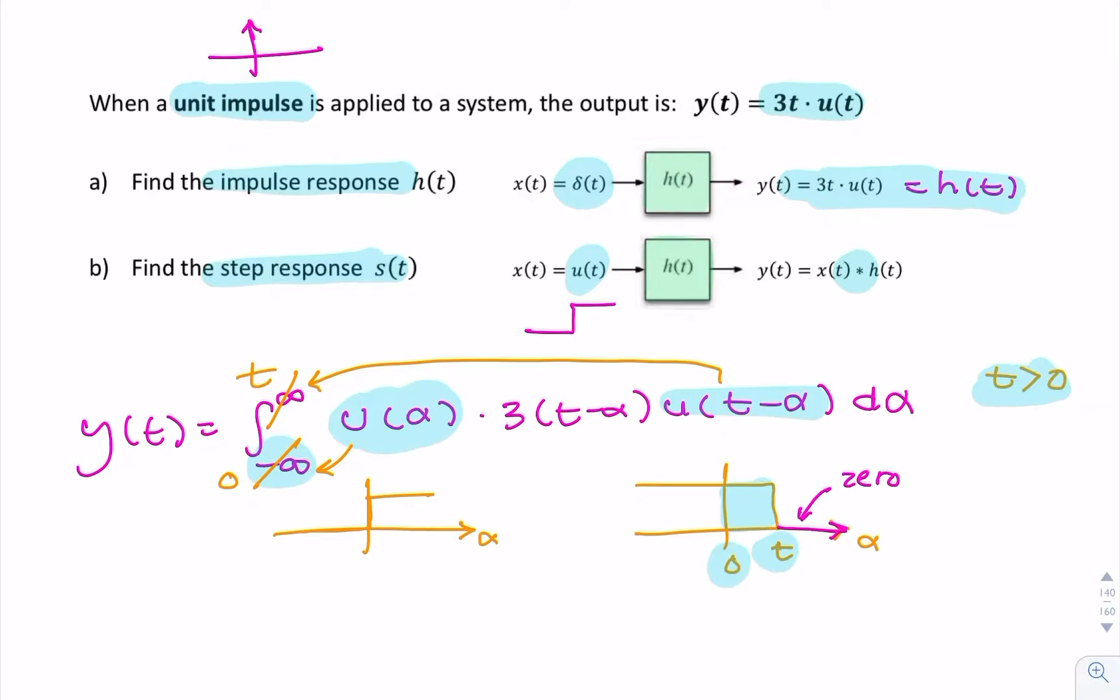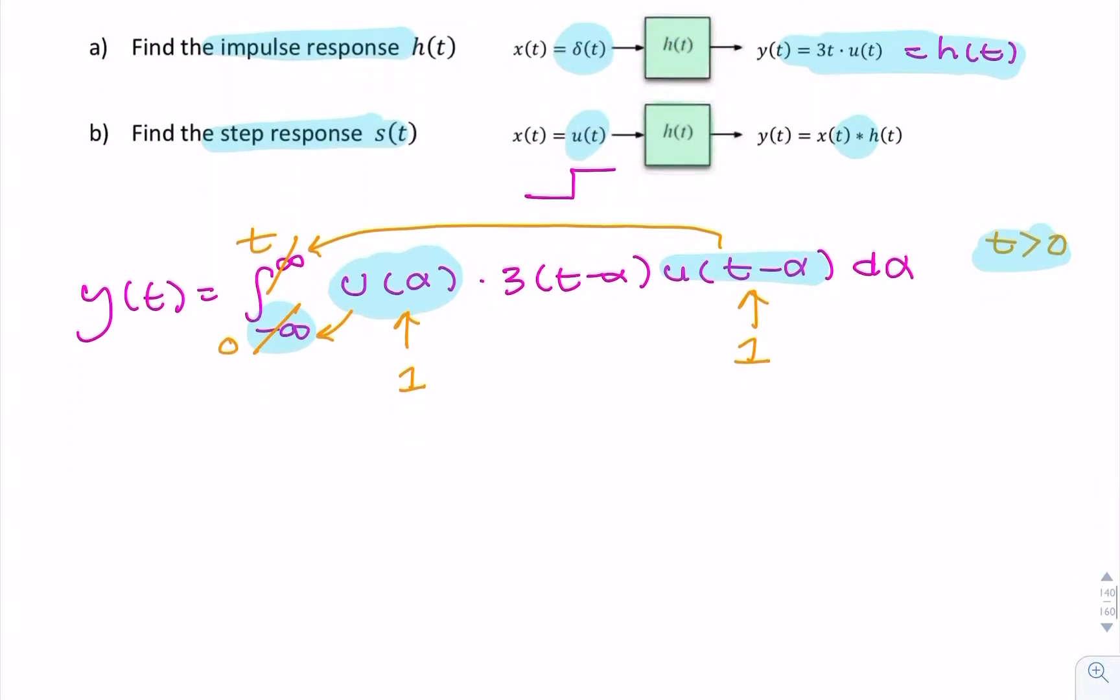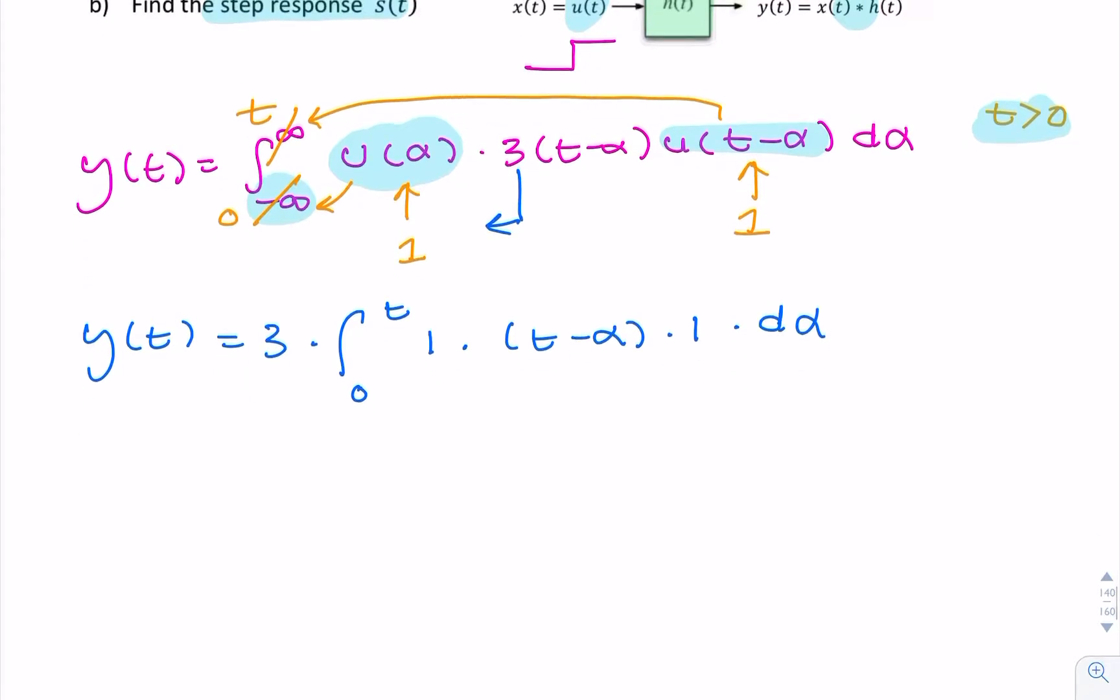So now we can replace our unit steps with one. So this just gets replaced with one. And this gets replaced with one. So our integration now looks like this. Y(t) equals, I can take this outside the integration. So we have zero to t, one times t minus alpha times one, d alpha. So the ones disappear. You have the integral from zero to t, t minus alpha, d alpha.